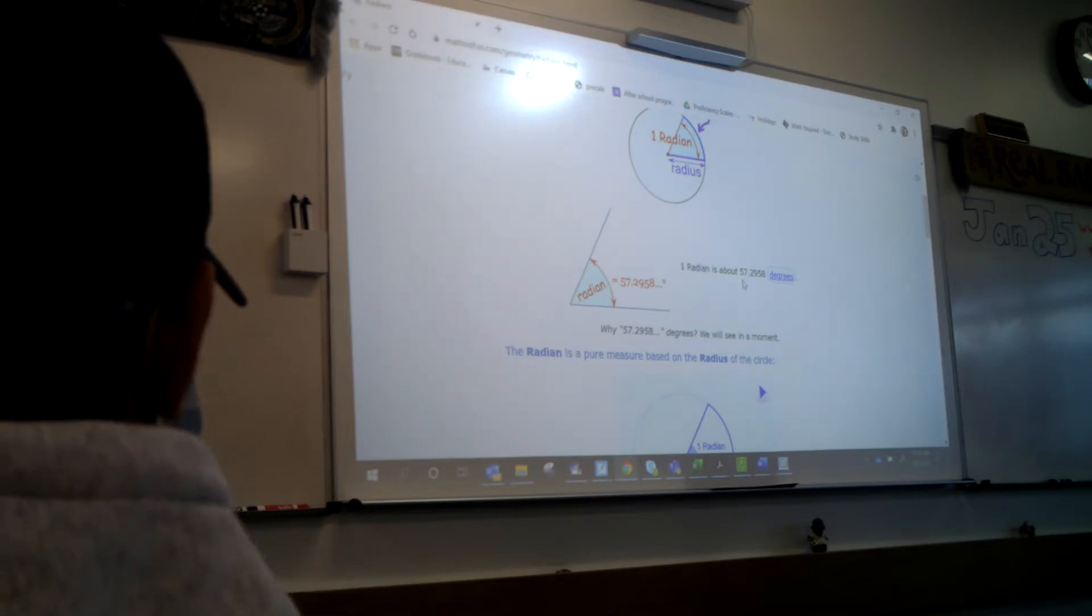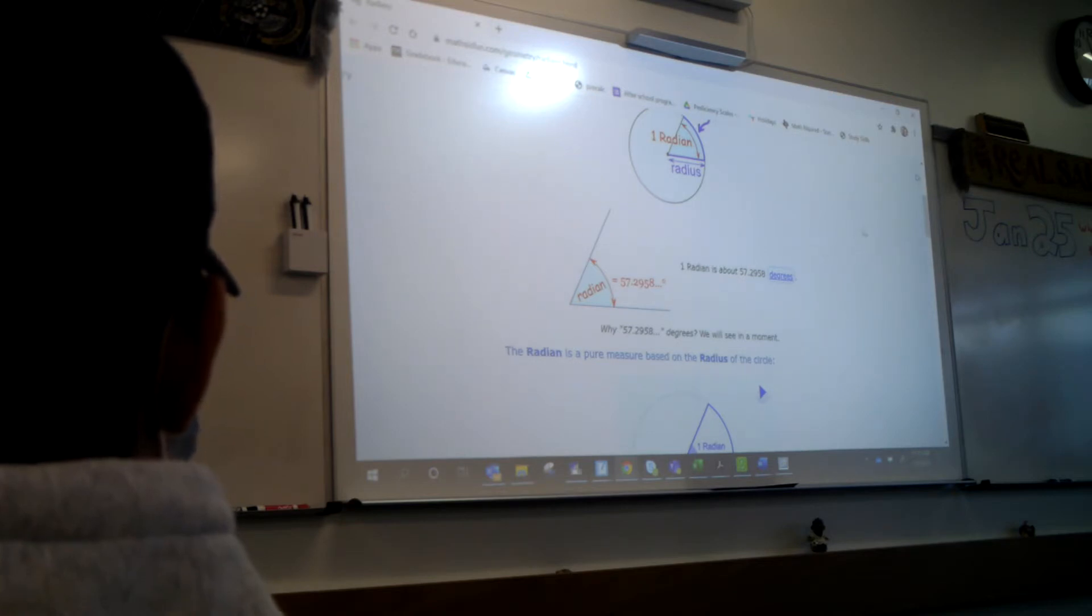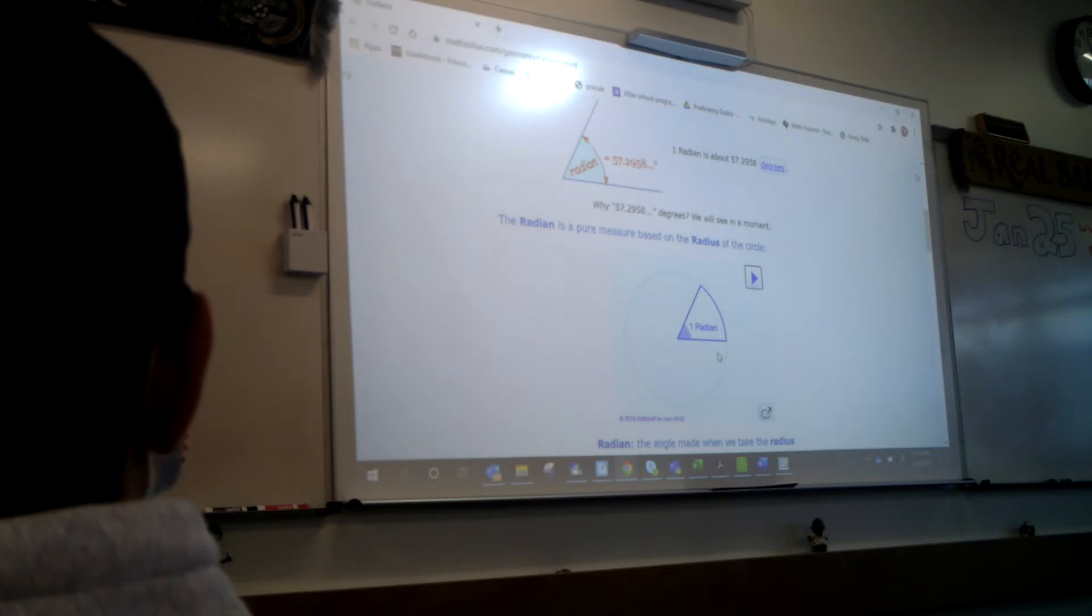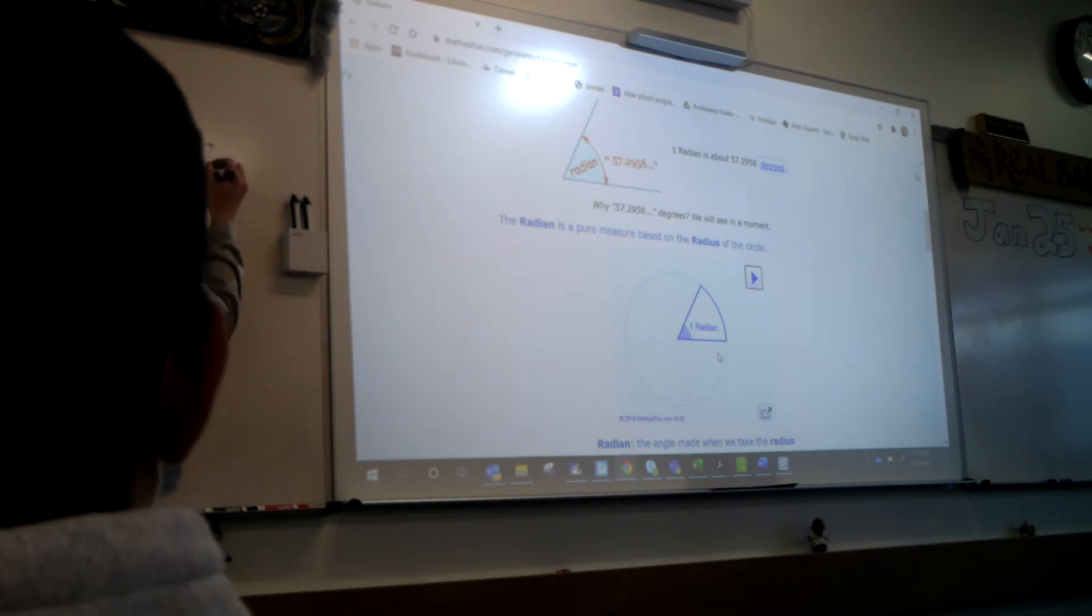Now a radian is actually 57.2958 degrees. So Mindy actually got curious and got a protractor and got about 58, so good job. Now this is how we make a radian. This is what you guys did. We took the radius, we mapped it onto the circle, and then we said how many fit in a circle. And what did you guys get? You got six. Six and a little. Now I'm actually going to tell you the answer. It should be six and a little. That little bit is actually 0.28.